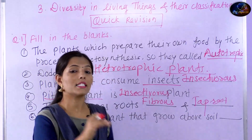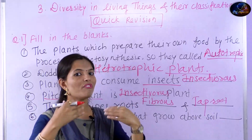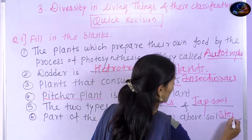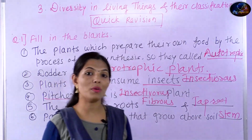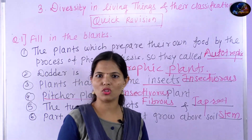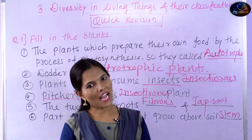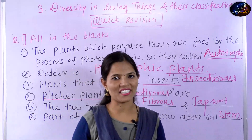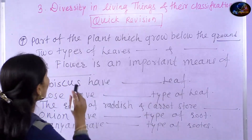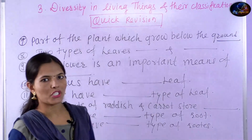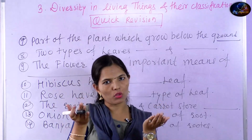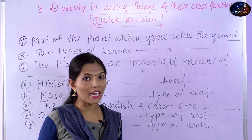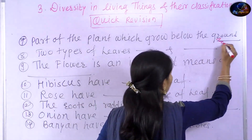The next question is about parts of the plant. The part of the plant that grows above the soil is called the stem. The part of the plant that grows below the ground is called the root. So — stem grows above ground, root grows below ground.